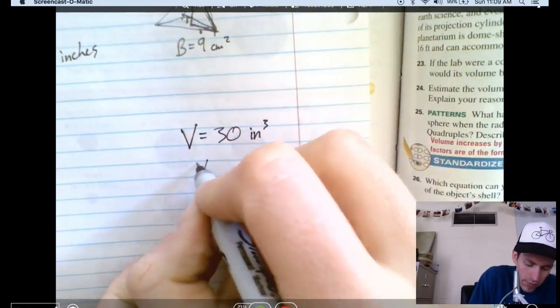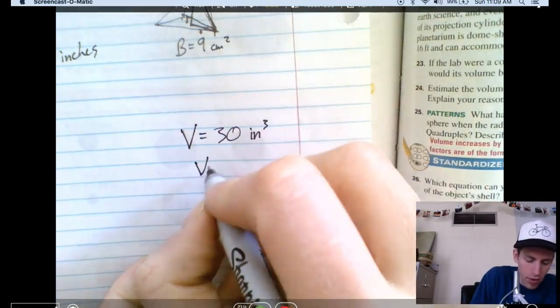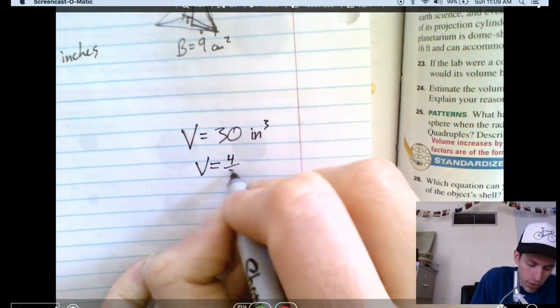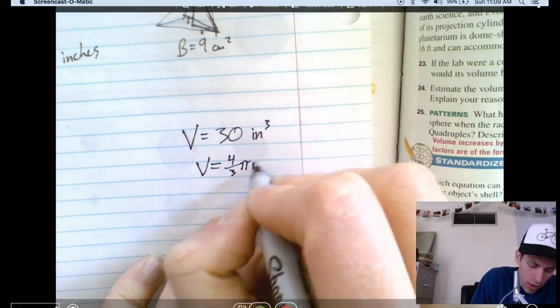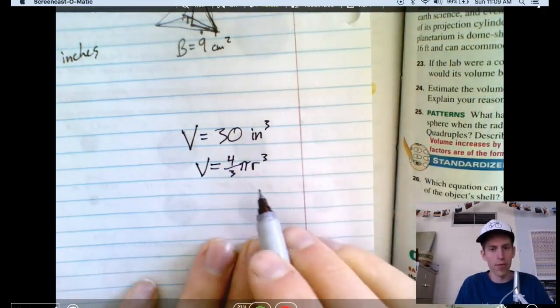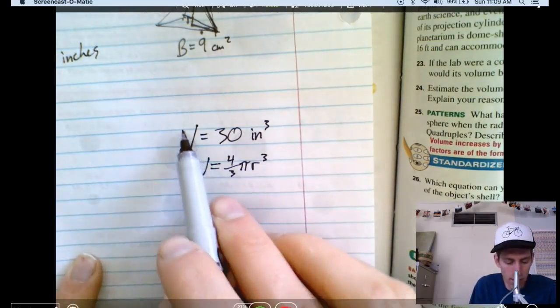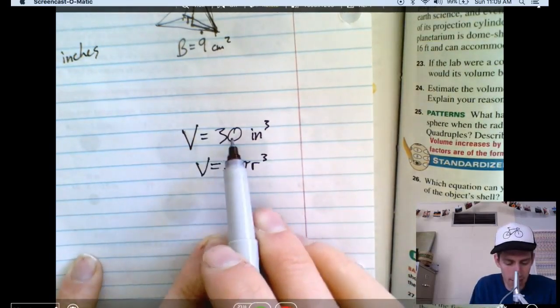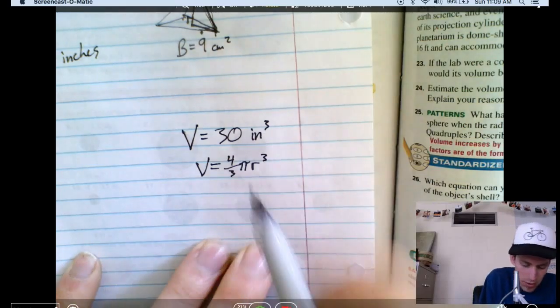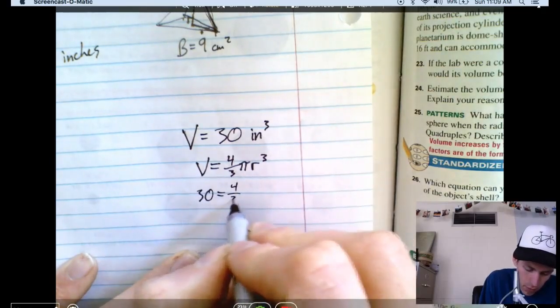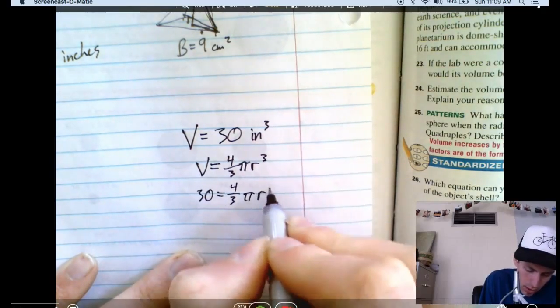Well, to do that, you'd have to put the formula for the volume of a sphere. The volume equals, do you remember it yet? Four-thirds pi r cubed. Write the formula and then plug in what you know. Well, we know that volume is the same as 30 cubic inches. I'm going to put 30 in here. Don't need to put the units, right? 30 for the volume. Four-thirds pi r cubed.